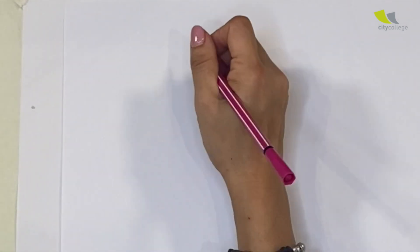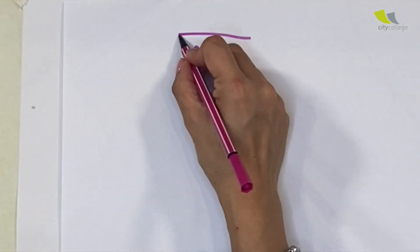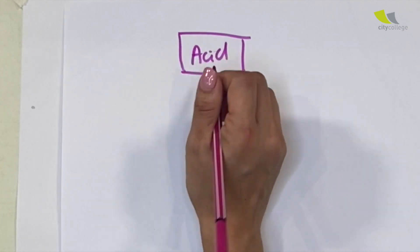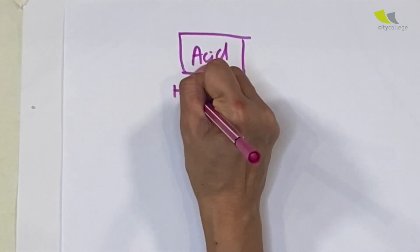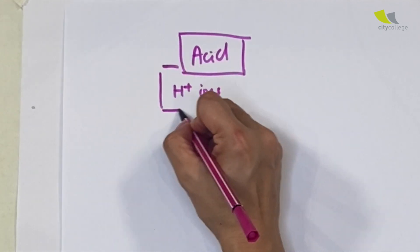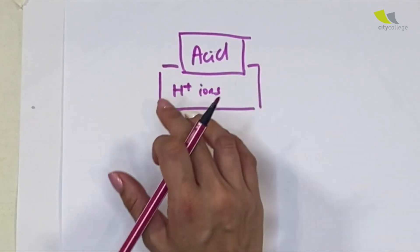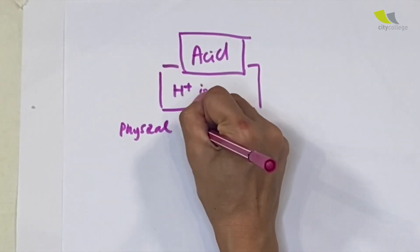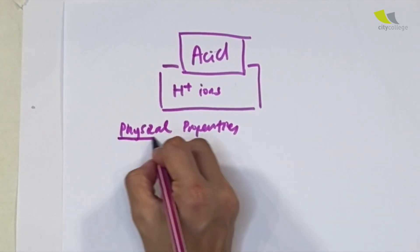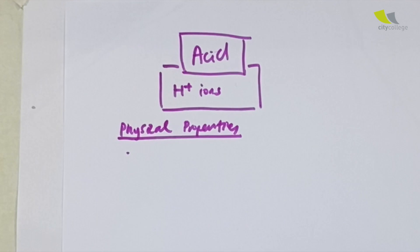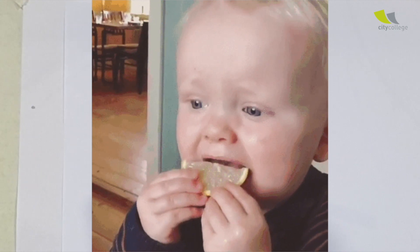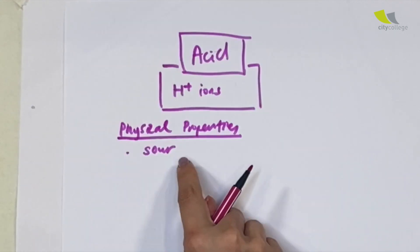I'm going to introduce acids first. For a substance to be considered an acid, one of the most important things it must have is H⁺ ions — meaning that in solution, it must give out H⁺ ions. As for physical properties, if you eat something and it tastes sour — for example, orange juice, lemon, or other fruits — those foods contain acid.